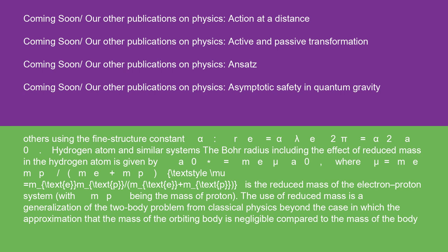The Bohr radius, including the effect of reduced mass in the hydrogen atom, is given by a₀* = (mₑ/μ)a₀, where μ = mₑmp/(mₑ + mp) is the reduced mass of the electron-proton system, with mp being the mass of proton.